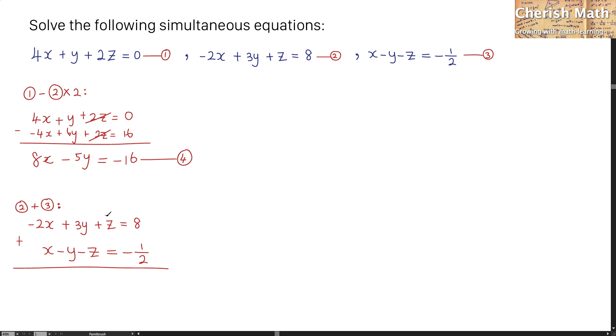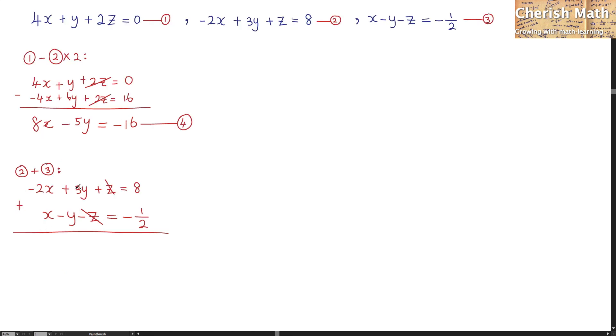By simplifying this part, that turns negative x plus 2y is equal 15 over 2. And I'm going to name this as our fifth equation.